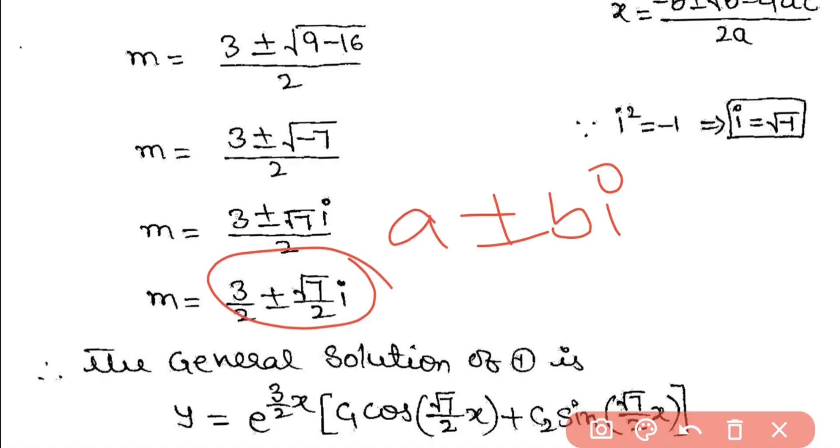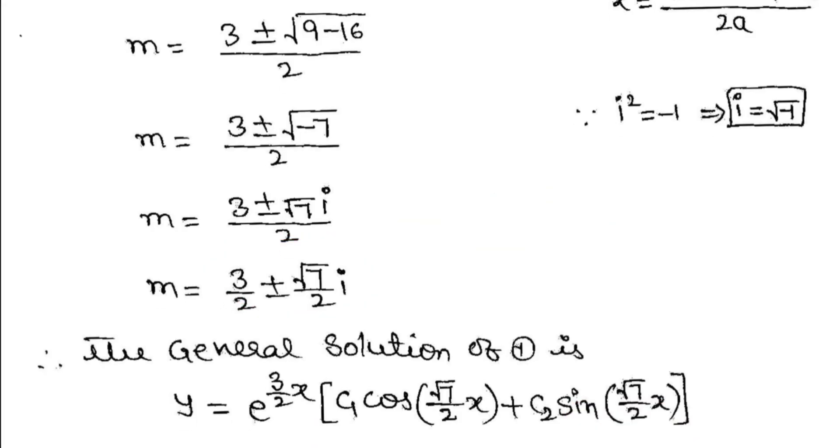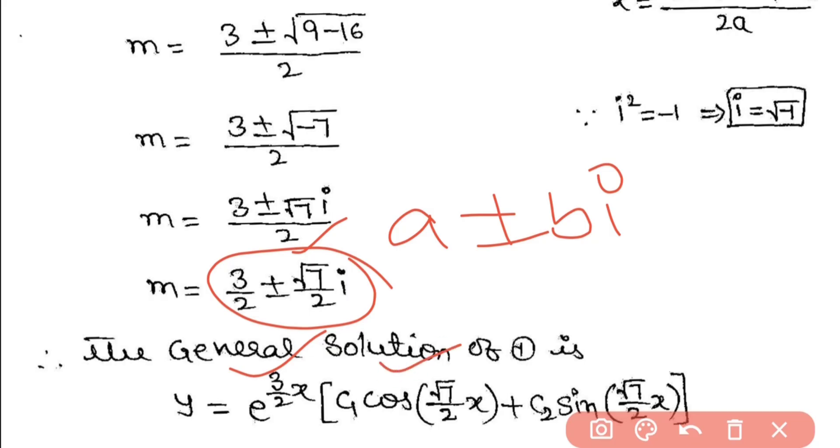yc = e^(Ax) = e^(3x/2) × [C1·cos(Bx) + C2·sin(Bx)], where B = √7/2. So yc = e^(3x/2) × [C1·cos(√7x/2) + C2·sin(√7x/2)]. This is the general solution.